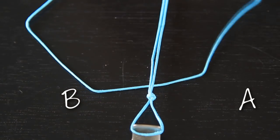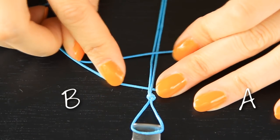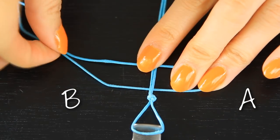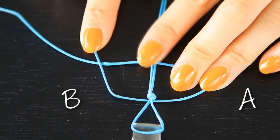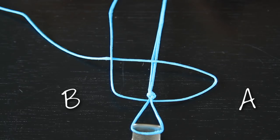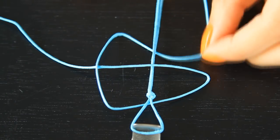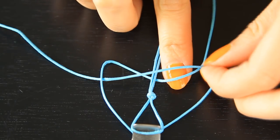So with string A, what you want to do is make a little loop like I'm doing right now and place that string over the double strings. Now with string B, you're going to take that, you're going to place it over string A and then you're going to tuck it under the double string and then you're going to pull it through that loop that we made with string A. And that's basically it.